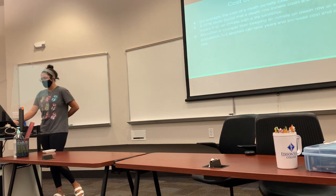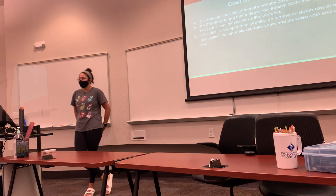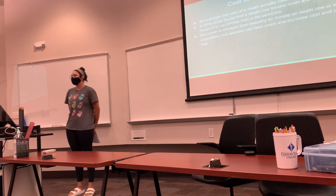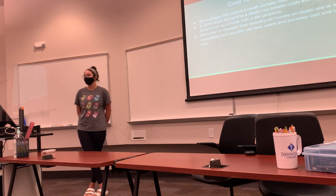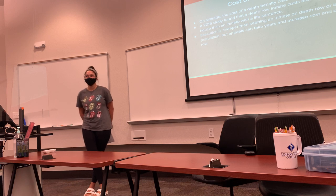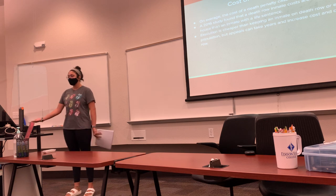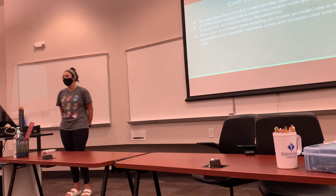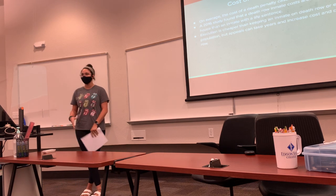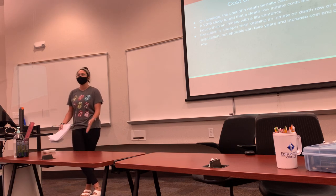Regarding the cost of capital punishment: on average, the cost of a death penalty case from start to finish is $2.4 million. A 2016 study found that a death row inmate costs around $1.12 million more to house than an inmate with a life sentence — almost 50% more than simply keeping them in prison for life. While execution itself is cheaper than keeping an inmate on death row or in general population, appeals can take years and significantly increase the cost of housing and care in prisons.